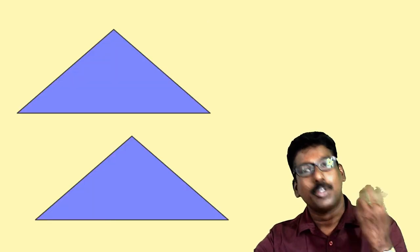Look at these two figures. Here these two are laptops. Here you can see the map of Asia, and here you can see two triangles. What is the speciality of these figures? You can see these two figures have the same shape. Now what about their size? If you keep one upon the other, it exactly coincides. That means these two figures have the same shape and the same size.